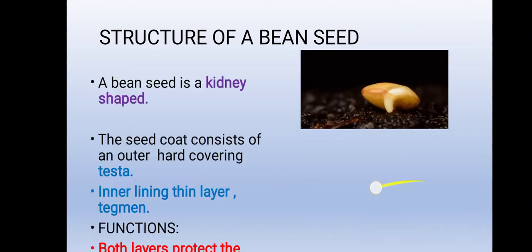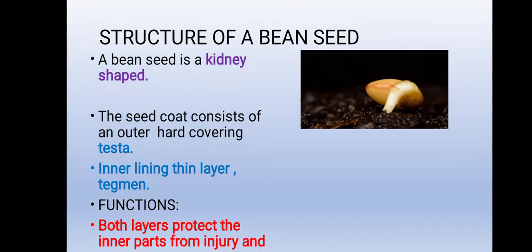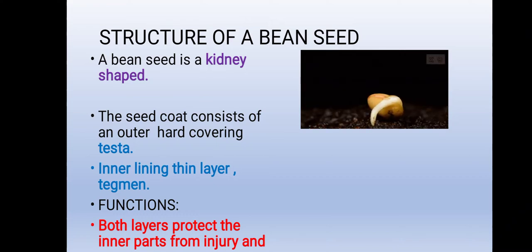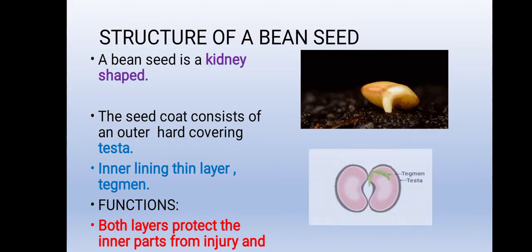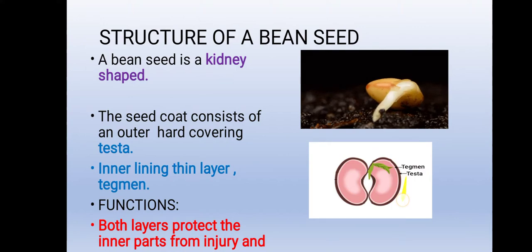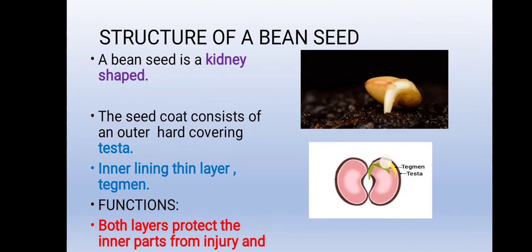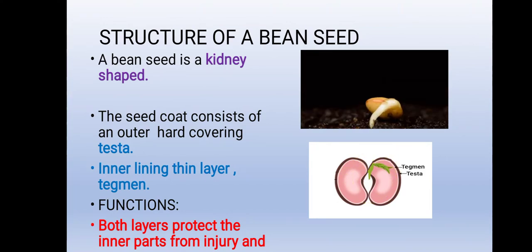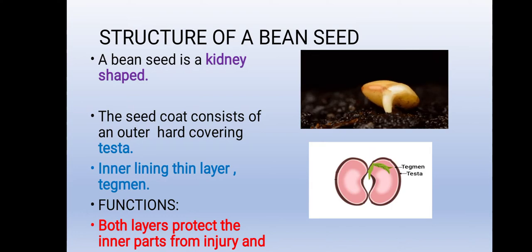Today we'll be learning about the structure of a bean seed. A bean seed is kidney shaped. The outer seed coat consists of an outer hard covering known as the testa. The inner thin lining layer is known as the tegmen. The main function of these two layers is protection from injury.